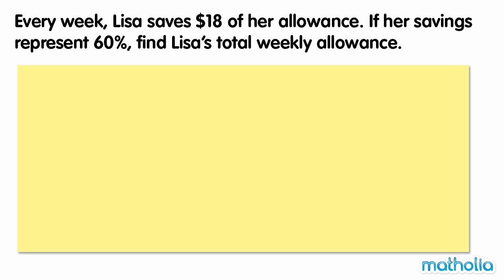Every week, Lisa saves $18 of her allowance. If her savings represent 60%, find Lisa's total weekly allowance. 60% equals $18.